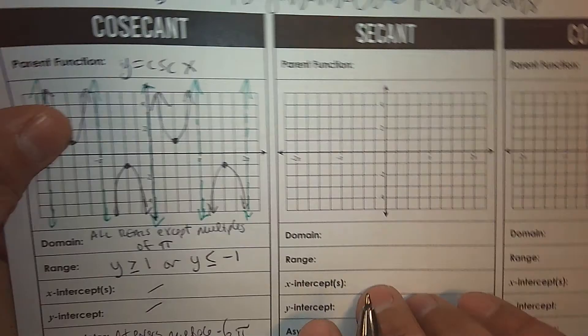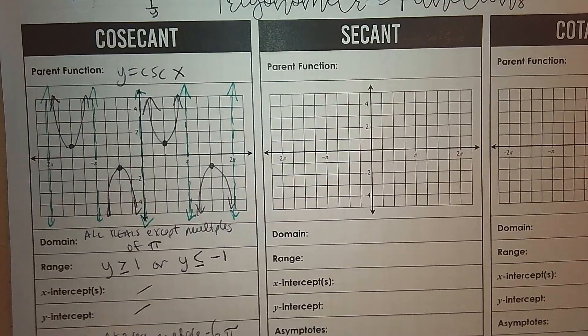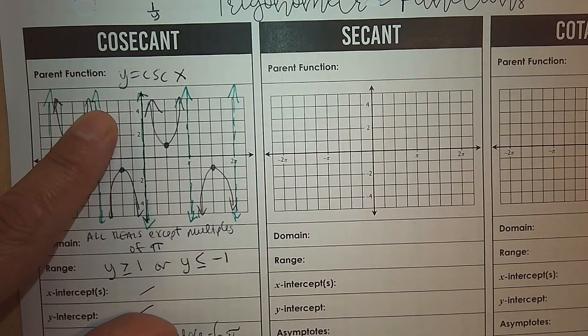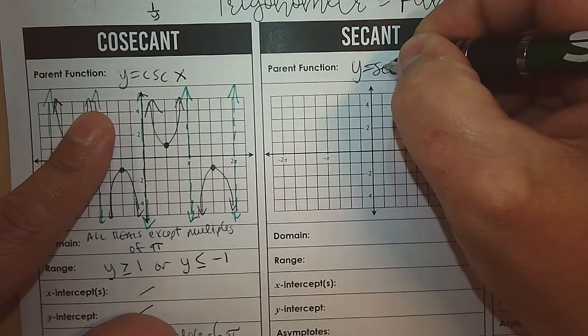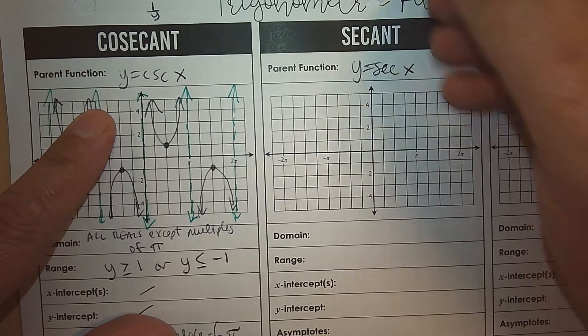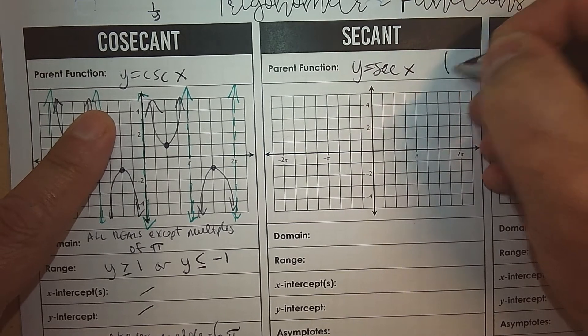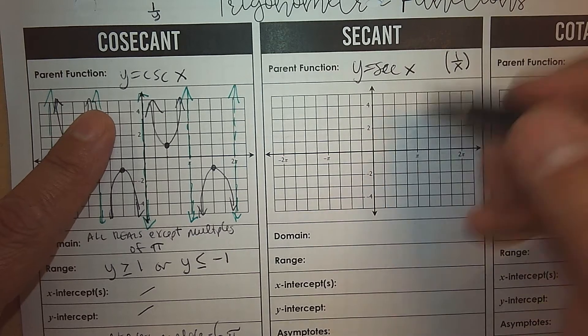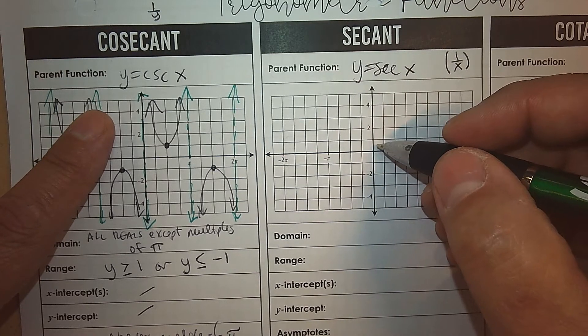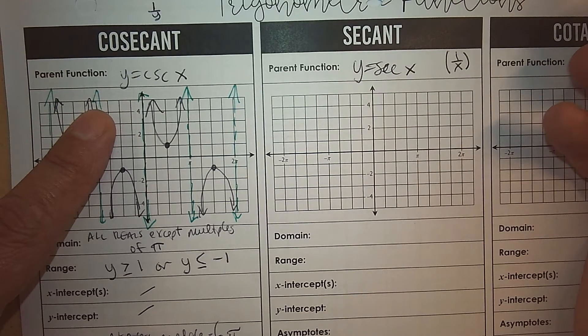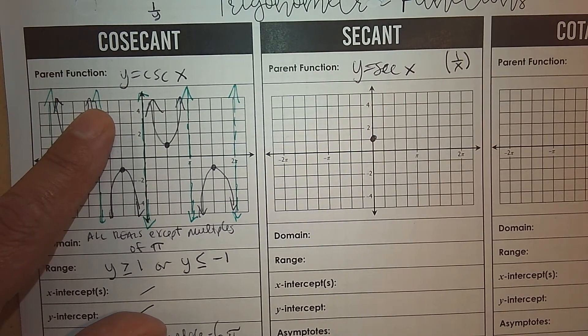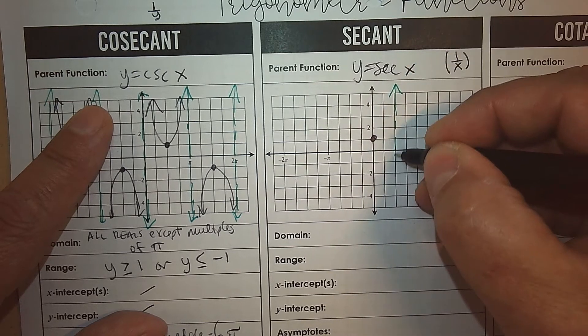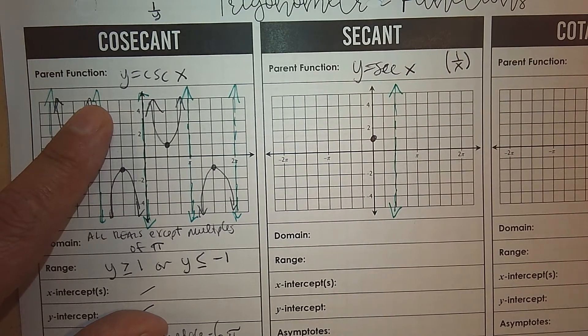Secant. So again, if you start at 0, know the definition of it. So the equation, obviously, is y equals secant x. What's the definition of secant? It's the reciprocal. So the rule is flip the x. So at 0 degrees, or radians, the x-coordinate is 1, and so the reciprocal of 1 is 1. At pi over 2, it's 0, and the reciprocal of 0 is undefined.